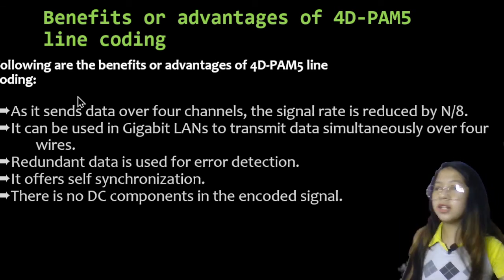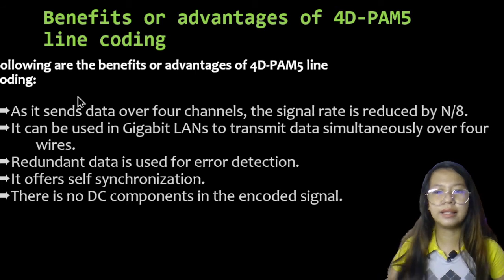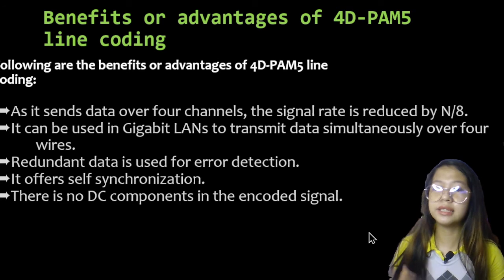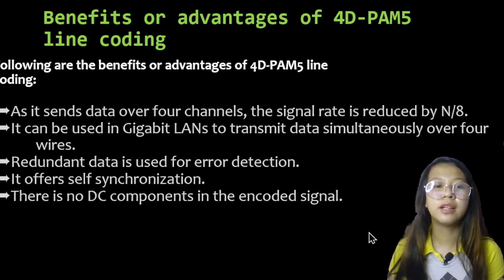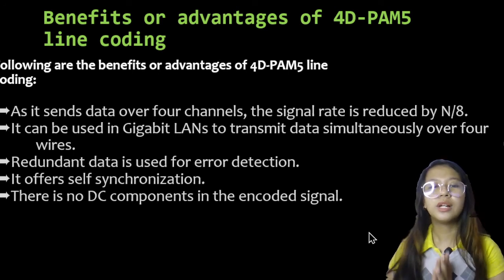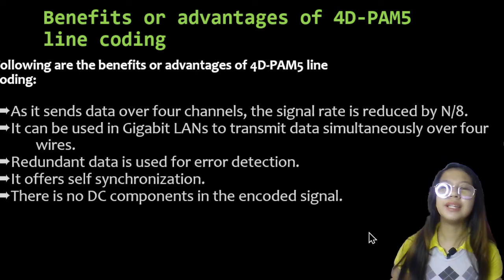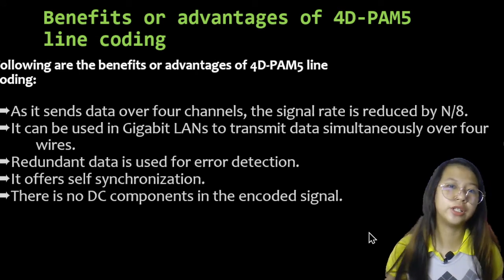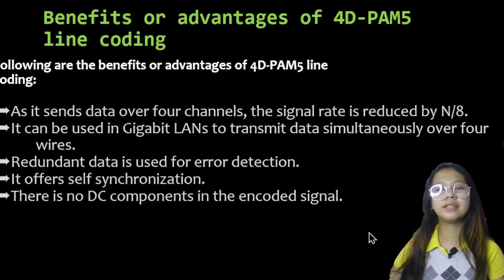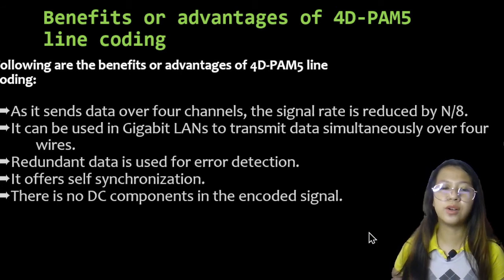The benefits or advantages of 4D-PAM5 line coding are as follows. First, as it sends data over four channels, the signal rate is reduced by N over 8. Second, it can be used in Gigabit LANs to transmit data simultaneously over four wires. Third, redundant data is used for error detection. Fourth, it offers self-synchronization. And fifth, there are no DC components in the encoded signal.